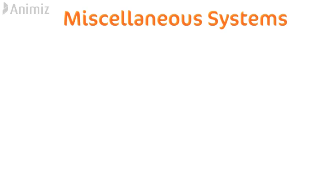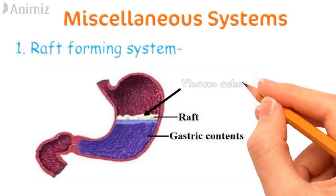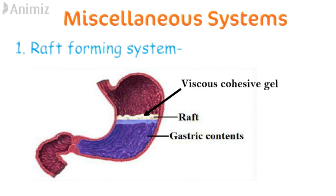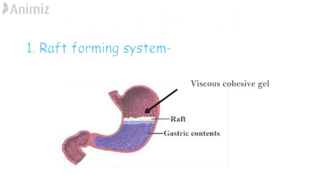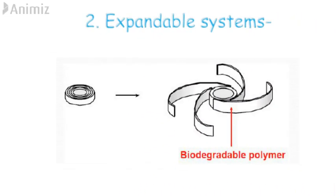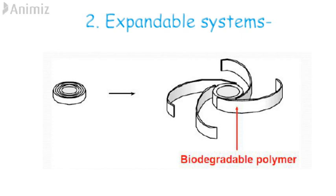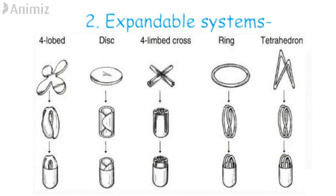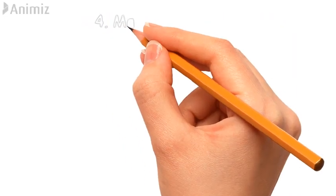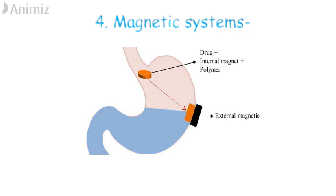Apart from these four systems, there are some miscellaneous systems. The raft forming system forms a viscous cohesive gel-like structure called a raft over the gastric content, used for drugs like antacids and for conditions like gastroesophageal reflux. The expandable system includes unfolding and swellable systems: a drug-loaded biodegradable polymer is folded and inserted into a carrier like a capsule; upon administration the capsule dissolves and the system expands to aid retention, coming in types like four-lobed disc, four-limbed cross-ring, and tetrahedral. There are also superporous hydrogels and magnetic systems, where drug is incorporated along with an internal magnet and an external magnet is placed over the stomach to retain the system.